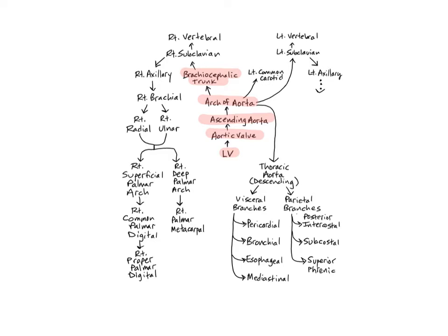We're going to be focusing on the branches that supply the arm. There is only one brachiocephalic trunk, which is why it's not given a right or left designation. It solves a plumbing problem in that it directs the blood up and over the superior vena cava. The trunk divides into the right common carotid artery, which leads up into the neck, and the right subclavian artery, which leads into the right shoulder and upper arm. The right subclavian continues as an extension of the brachiocephalic trunk — it doesn't actually branch off. It's the same vessel, just given a different name as it moves through a different body region.